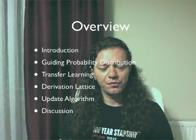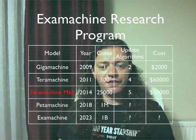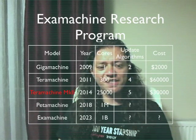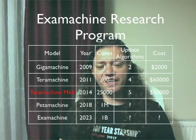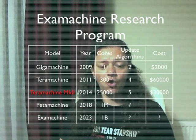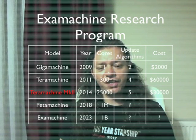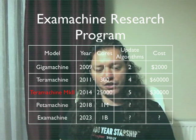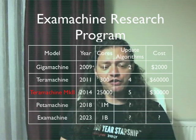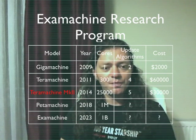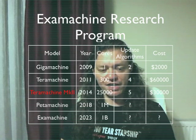Here is the overview. I am going to try to simplify it as much as possible. The ExaMachine Research Program was started in 2006. GigaMachine was done in 2009 and trained on a single core. The next version was TerraMachine in 2011 and trained on up to 300 cores. The present version is called TerraMachine Mark II and it scales even further. In the future, there will be more versions being planned right now.